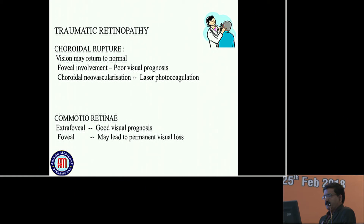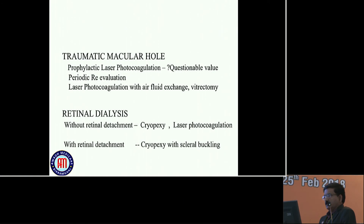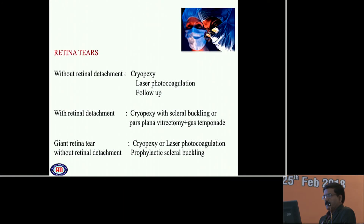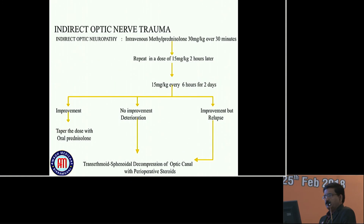Traumatic retinopathy. If there is choroidal rupture, vision may return to normal; if fovea is involved, poor visual prognosis. Choroidal neovascularization: laser photocoagulation is the treatment of choice. Commotio retinae: if extrafoveal, very good prognosis; foveal involvement may lead to permanent loss of vision. If there is traumatic macular hole, refer to vitreoretinal surgeons. Retinal tear: also refer to vitreoretinal surgeons.